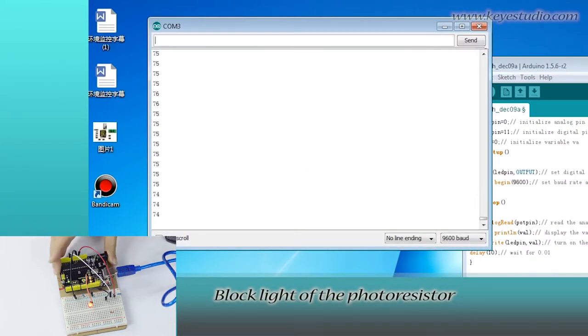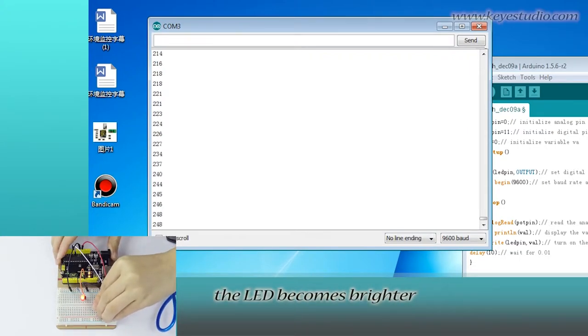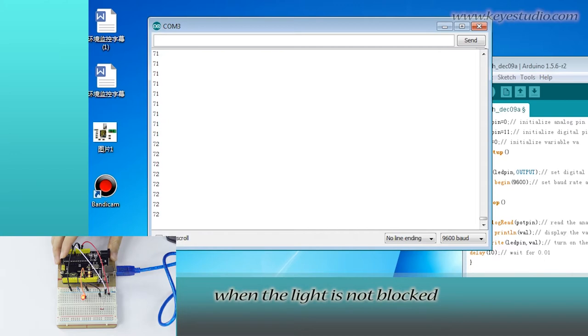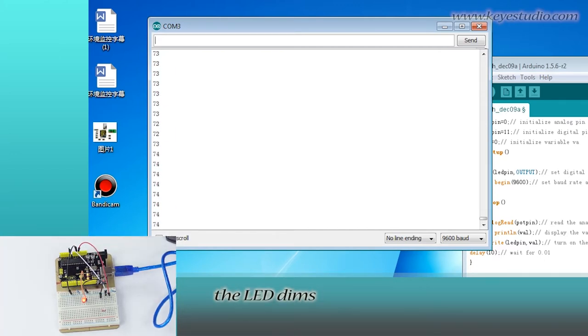Block light of the photoresistor. You can see the value increases. The LED becomes brighter. When the light is not blocked, you can see the value decreases. The LED dims.